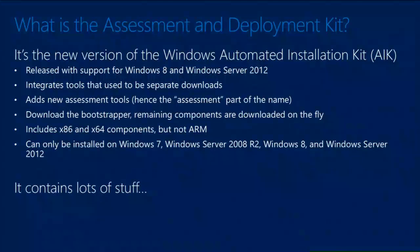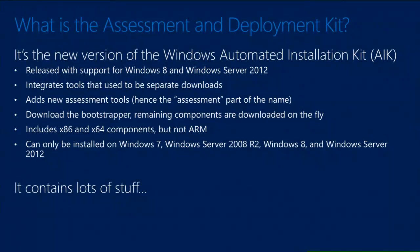The installation process for the ADK is basically to download a bootstrap file. One of the big complaints with the Windows AIK was that you downloaded a very large ISO, then had to figure out how to get the content out of that ISO to actually run the installation. So they changed that to just an executable. When you run it, it goes out to the download center and downloads the specific components you selected. If you just choose one or two components, the install is fairly small and fairly quick. Unfortunately, the one most people install is Windows PE, which was the bulk of that size. As soon as you check Windows PE as a component to install, you're still going to have a few hundred megabytes to download.